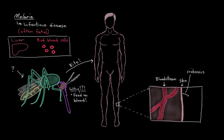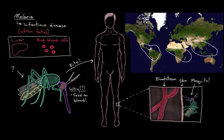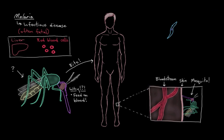People get bitten by mosquitoes all the time and they're fine. But some mosquitoes — particularly ones that live in certain more tropical parts of the world, closer to the equator, like some African, Asian, and Latin American countries — carry a parasite called Plasmodium. There are a couple different types of Plasmodium, but for now we'll focus on Plasmodium falciparum, because this type causes the highest number of deaths in humans.